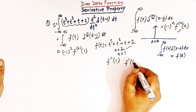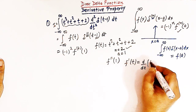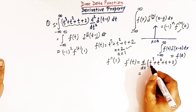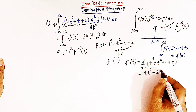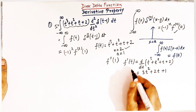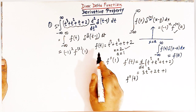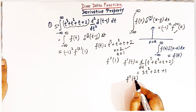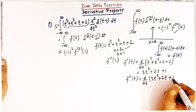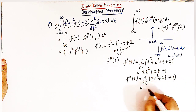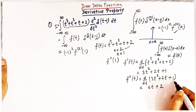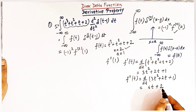So we have to find the second derivative of f(t). The first derivative is f'(t) = d/dt of (t³ + t² + t + 2), which gives 3t² + 2t + 1; the derivative of 2 is 0. Now the second derivative f''(t) is the derivative of 3t² + 2t + 1, which gives 6t + 2.